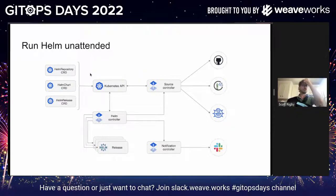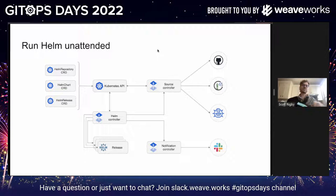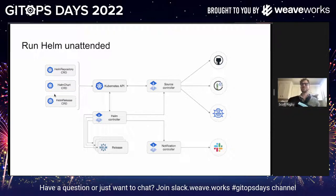There's a diagram from the Flux docs showing the architecture and how those controllers work together to manage Helm releases using GitOps. In short: the sources are on the right, the source controller pulls them in and writes back to the Kubernetes API. You can see the Helm controller talking both to the source controller and the Kubernetes API, managing your Helm releases. For more details, check out the docs.